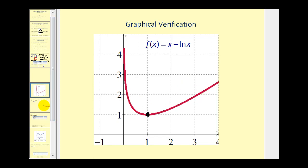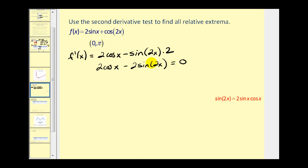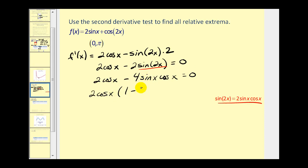Let's try another example. We'll start by finding the critical numbers, so let's find the first derivative: two cosine x. Applying the chain rule to the next term gives negative sine(2x) times two. This is always defined on the given interval. Setting the derivative equal to zero: two cosine x minus two sine(2x) equals zero. Using the double angle identity sine(2x) equals two sine x cosine x, we substitute to get two cosine x minus four sine x cosine x equals zero. Factoring out two cosine x leaves one minus two sine x equals zero.